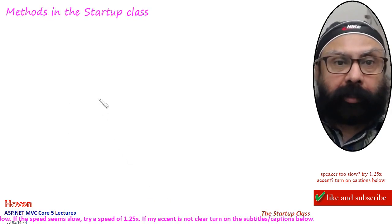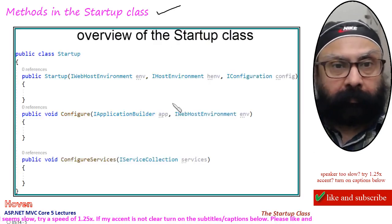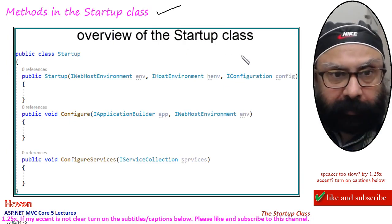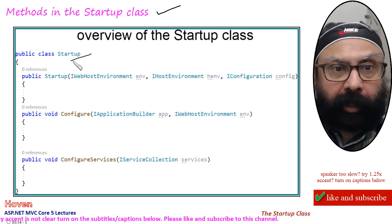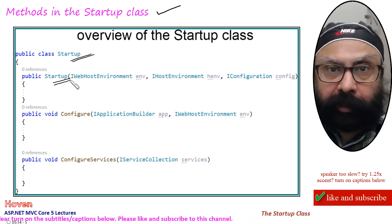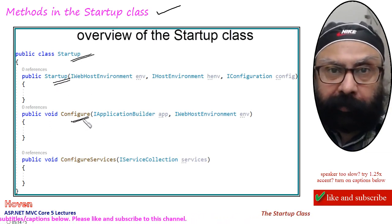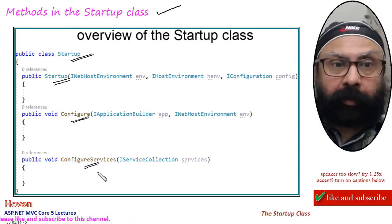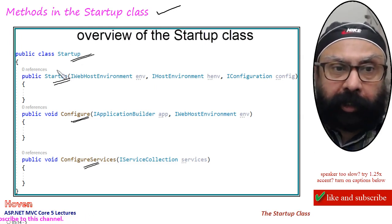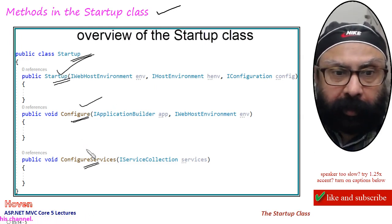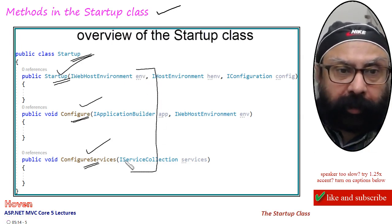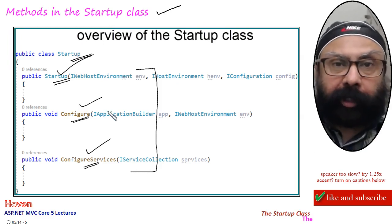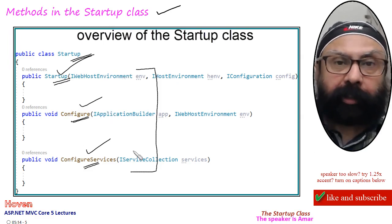Now we should study the various methods in the startup class. This is the overview of a possible startup class. It has a constructor, a method called Configure, and a third method called ConfigureServices. So your startup class can contain these three possible methods, and we will study the details of all three.